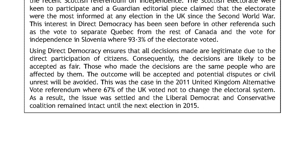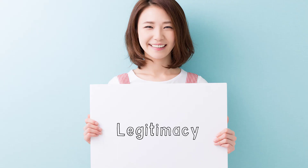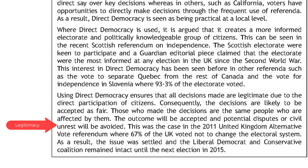Now for the final paragraph of Source A. Using direct democracy ensures that all decisions made are legitimate due to the direct participation of citizens. Consequently, the decisions are likely to be accepted as fair. Those who made the decisions are the same people who are affected by them, so the outcome will be accepted and potential disputes or civil unrest will be avoided. This was the case in the 2011 UK alternative vote referendum, where 67% voted not to change the electoral system, the issue was settled, and the Liberal Democrat and Conservative Coalition remained intact until 2015. The word that sums up this paragraph would be legitimacy, and so I will annotate the final paragraph with that word.